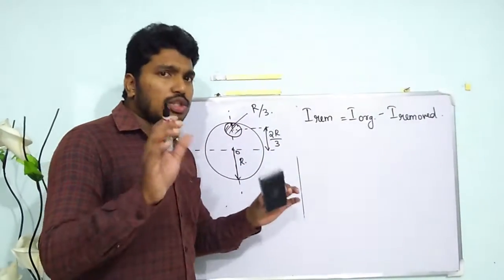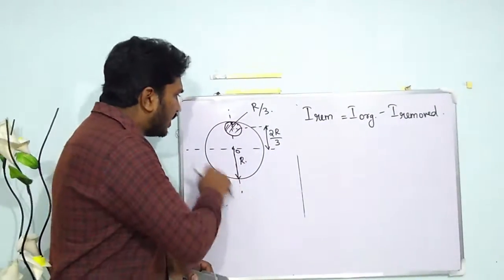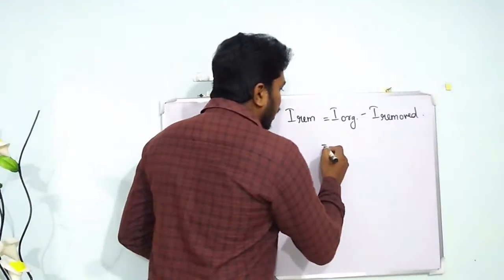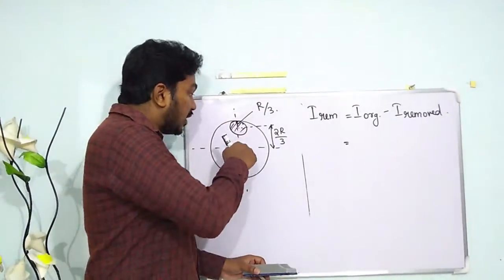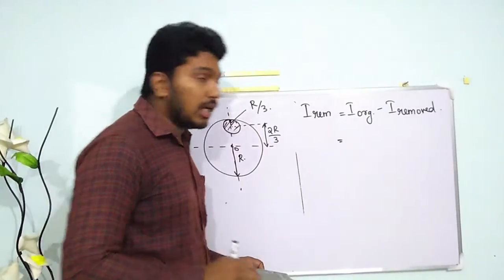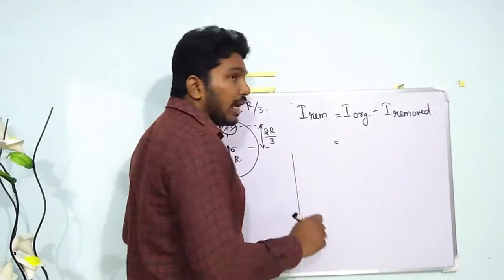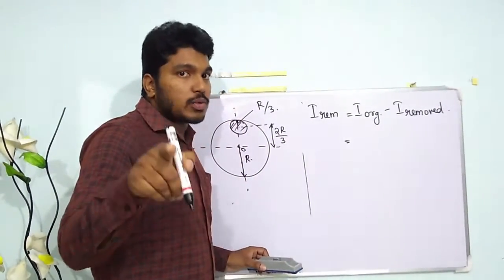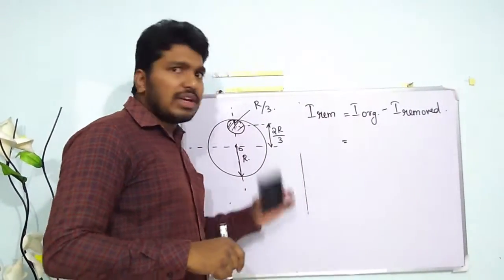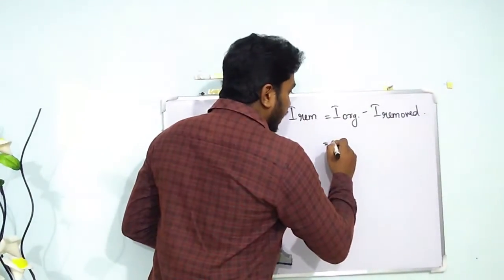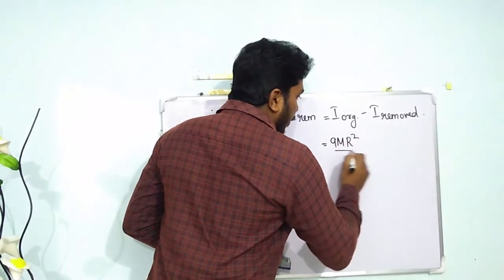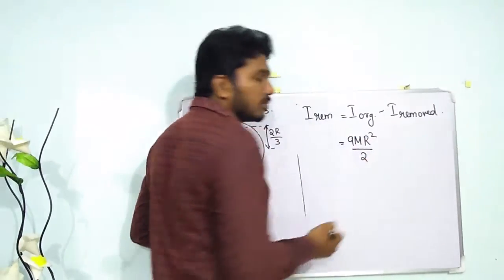What is the original moment of inertia of the disk? The moment of inertia through an axis perpendicular to the plane and passing through the center is given by mr²/2. Here mass is 9m, so I_original = 9mr²/2.